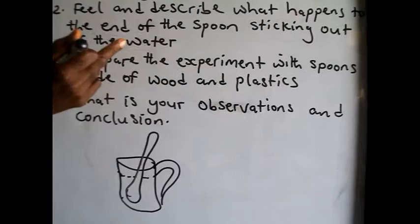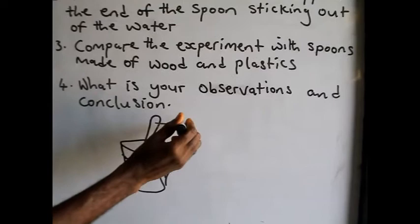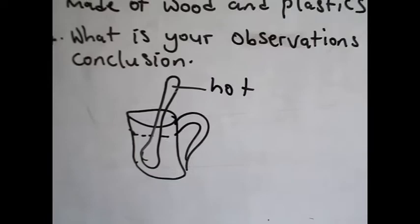Compare the experiment with spoons made of wood and plastic. Now after you do this, feel it. I am going to give you the answer: this area will be hot. Why is it hot? Because there is a transfer of heat in this container to the spoon. So what has happened is conduction.